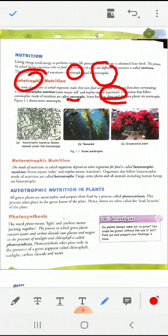Autotrophic nutrition includes bacteria, algae, and all green plants. Already shown in this picture: bacteria, nostoc, seaweeds (algae), and ornamental plants. All are examples of autotrophic nutrition.